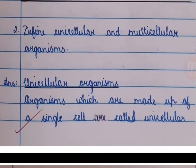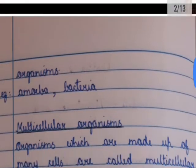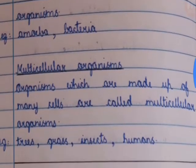Question 2: Define unicellular and multicellular organisms. Answer: Unicellular organisms — organisms which are made up of a single cell are called unicellular organisms. Example: Amoeba, bacteria.